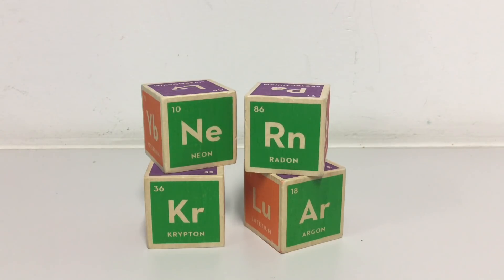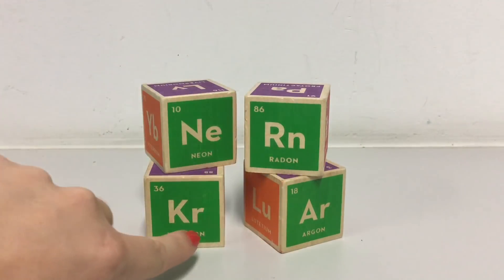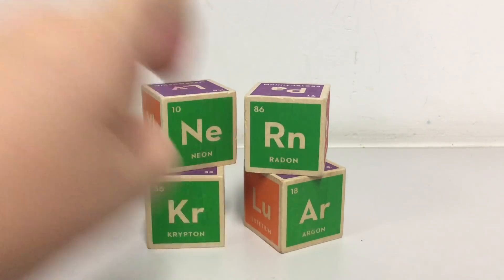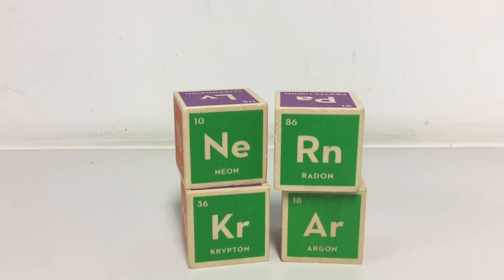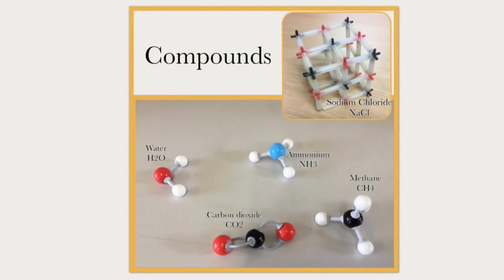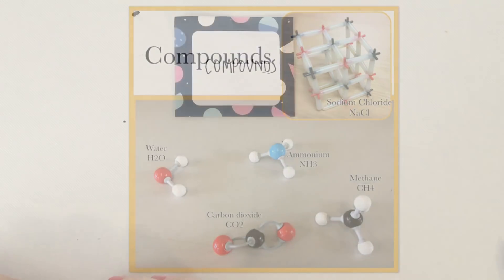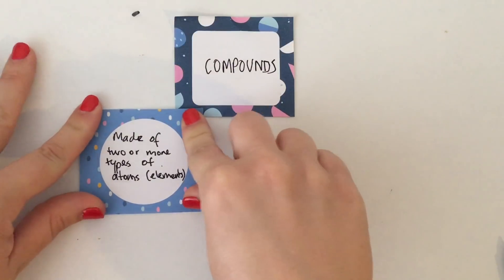All of those are elemental gases represented with models. Elements also include single atoms which aren't bonded to others, which form the noble gases: neon, radon, krypton, argon, helium, and xenon. The noble gases are also called inert gases because they don't bond or react with other atoms, so they exist only in the elemental form.